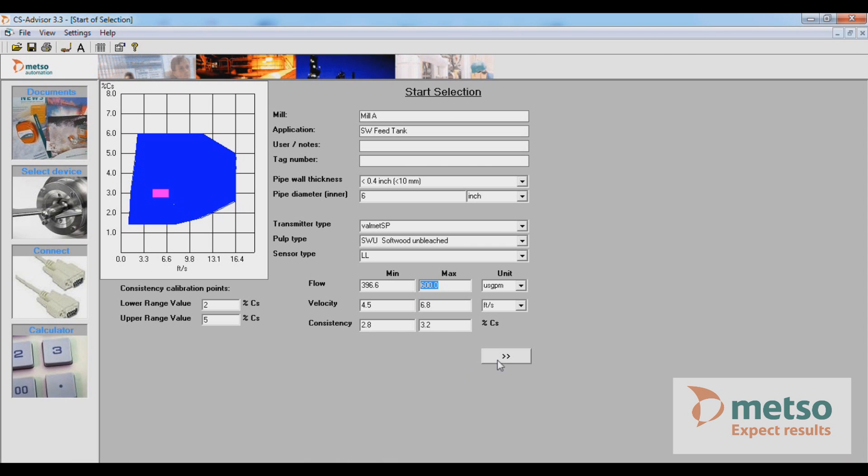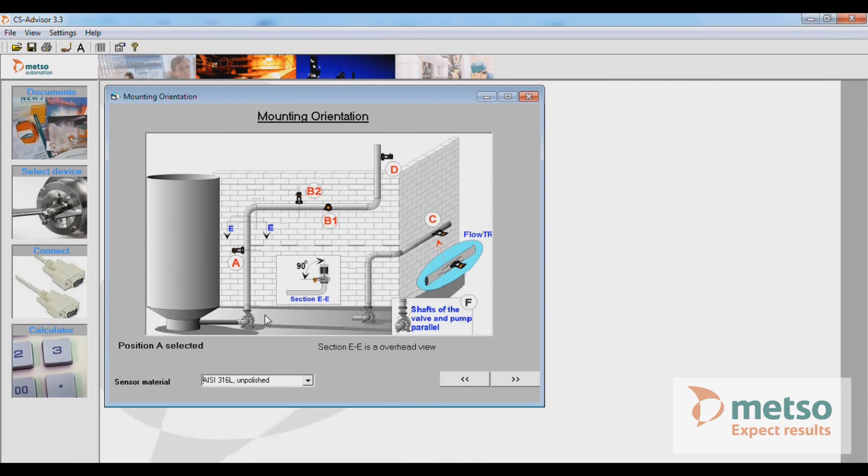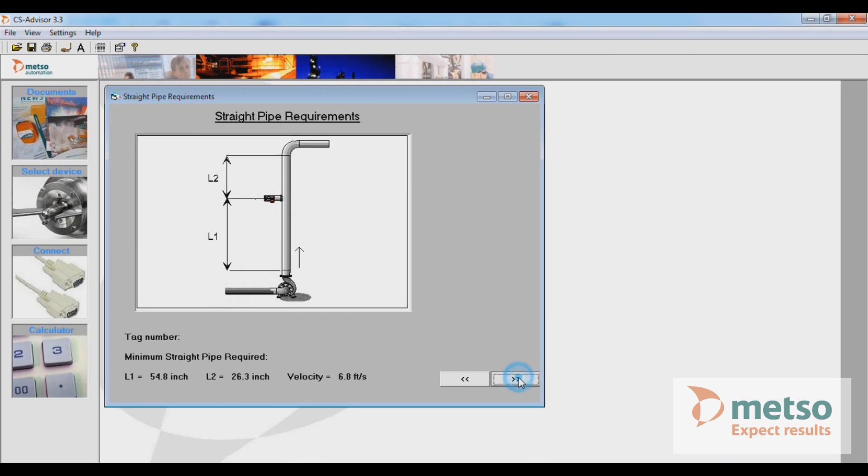So we're going to go to the next step. In our scenario, we're going to have a vertical up installation. We're going to select that, go to the next screen. It automatically calculates our L1, our straight pipe requirements before the SmartPulp, and our L2 straight pipe requirements after the SmartPulp.